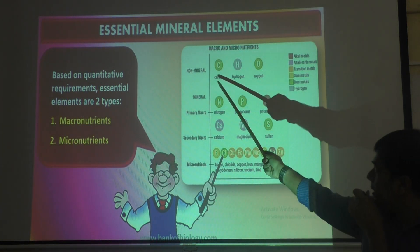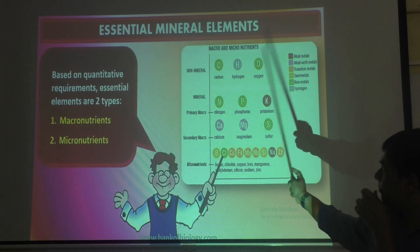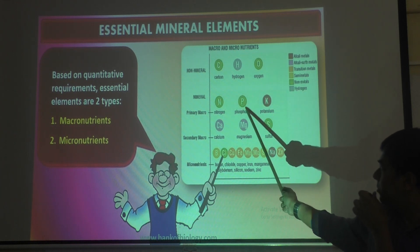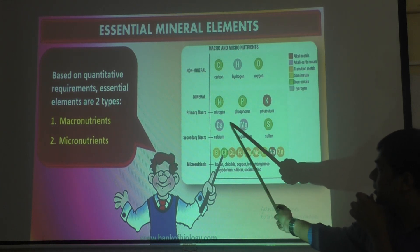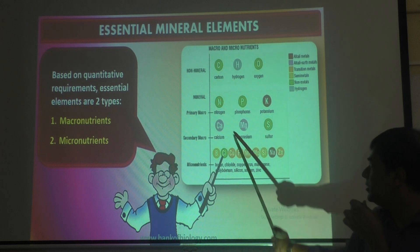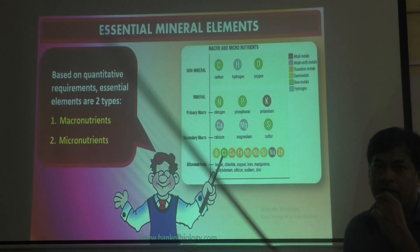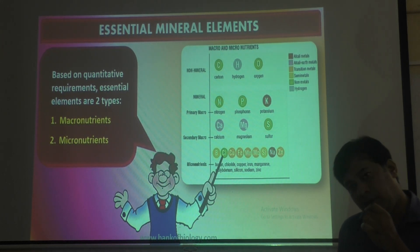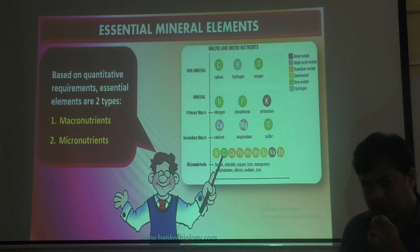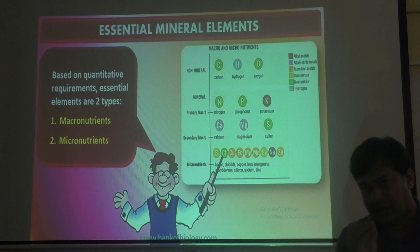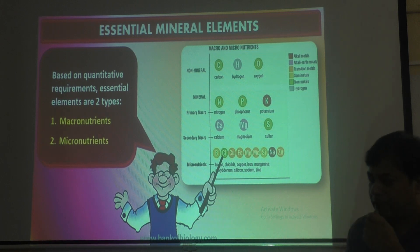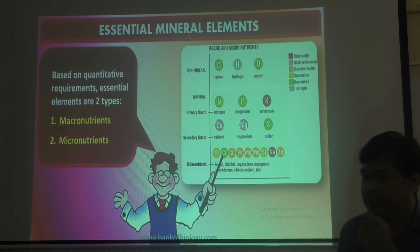The nine elements the plant requires in large quantity are carbon, hydrogen, oxygen, nitrogen, phosphorus, potassium, calcium, magnesium, and sulfur. Out of seventeen, if you remove nine, eight remain. So the remaining eight elements are micronutrients, meaning the plant requires them in less quantity.